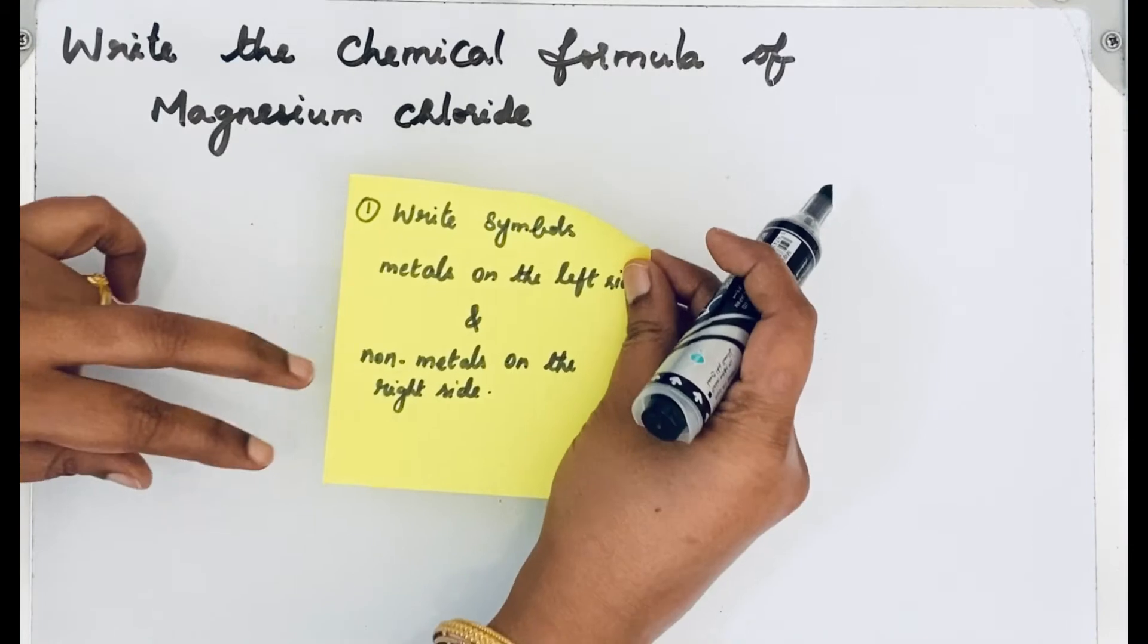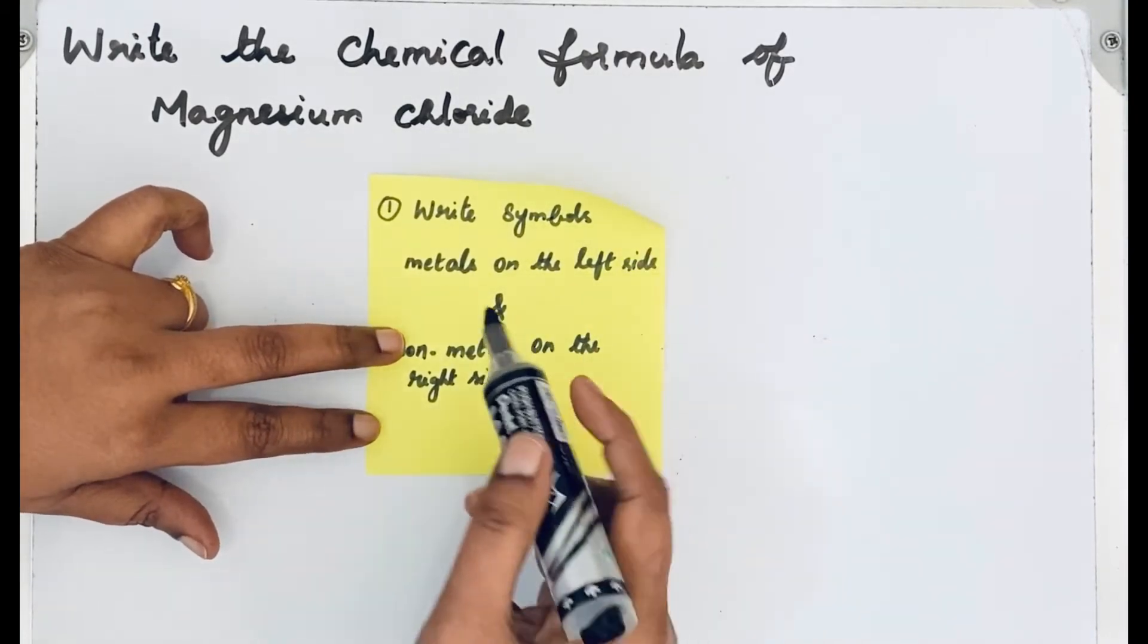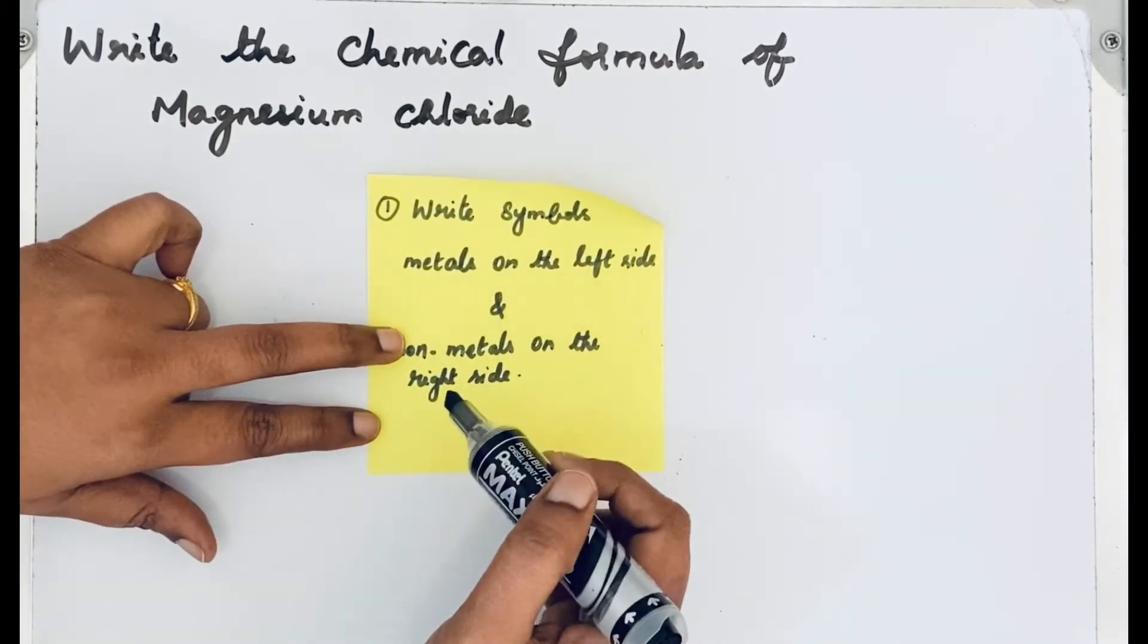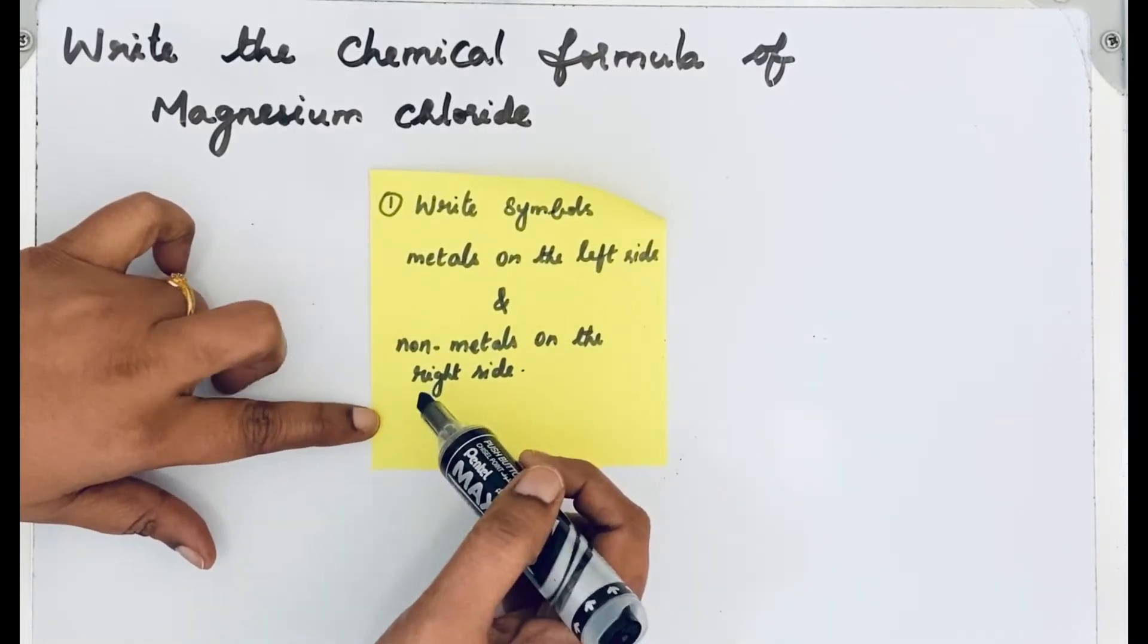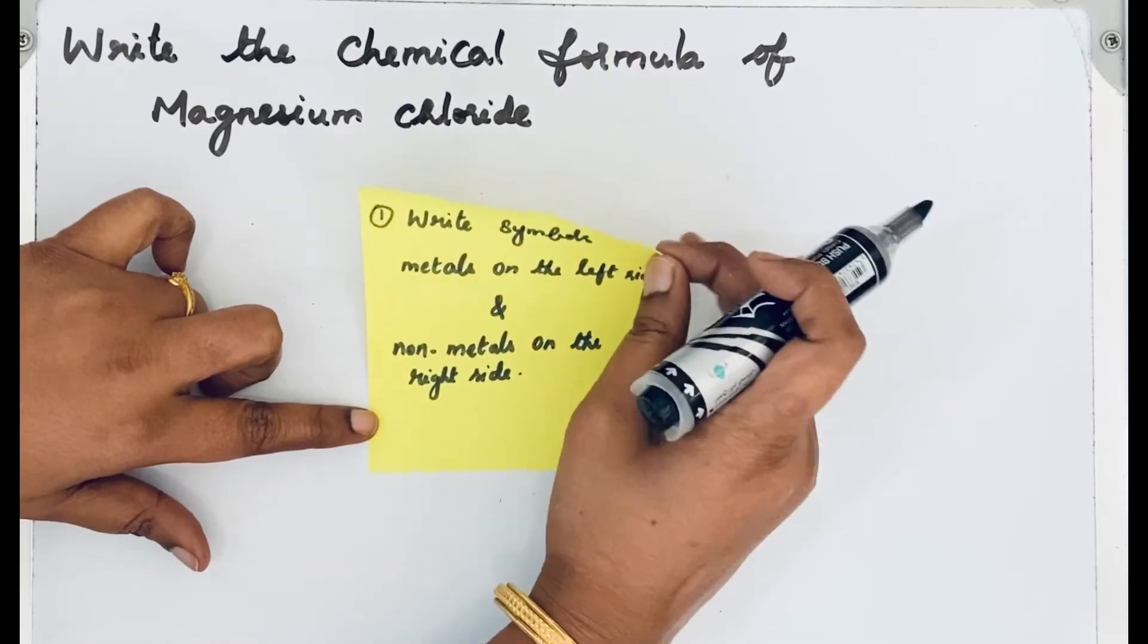Step one is write symbols of metals and non-metals. For metals we are writing it on the left side, and for non-metals we are writing it on the right side.